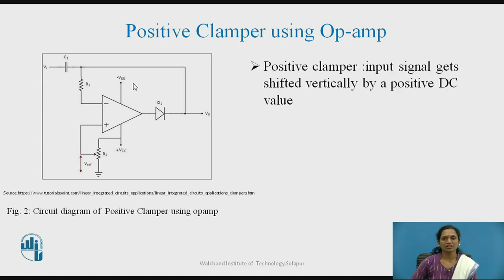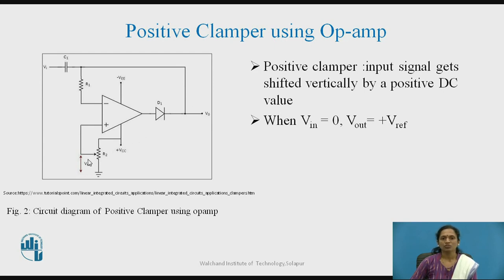To analyze the circuit, we apply the superposition theorem and calculate the total output voltage. First, we assume the input signal is 0. Since V_reference is connected to the non-inverting input, we obtain a positive reference voltage at the output. This is the first case: output voltage equals the reference voltage.